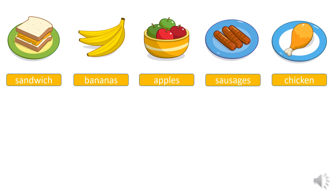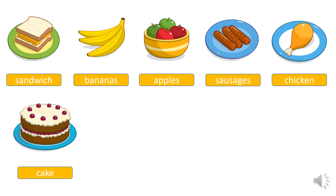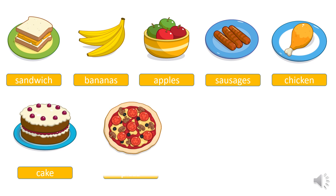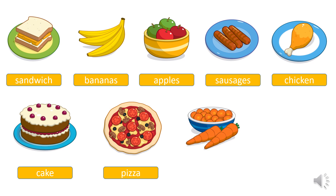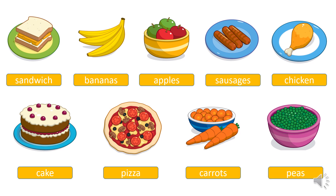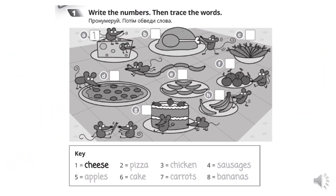Chicken. Cake. Pizza. Carrots. Peas. Open your activity books on page 52. Відкрийте друковані зошити на сторінці 52. Let's do activity number one. Давайте виконаємо першу вправу. Write the numbers, then trace the words. Пронумеруйте, потім наведіть слова.